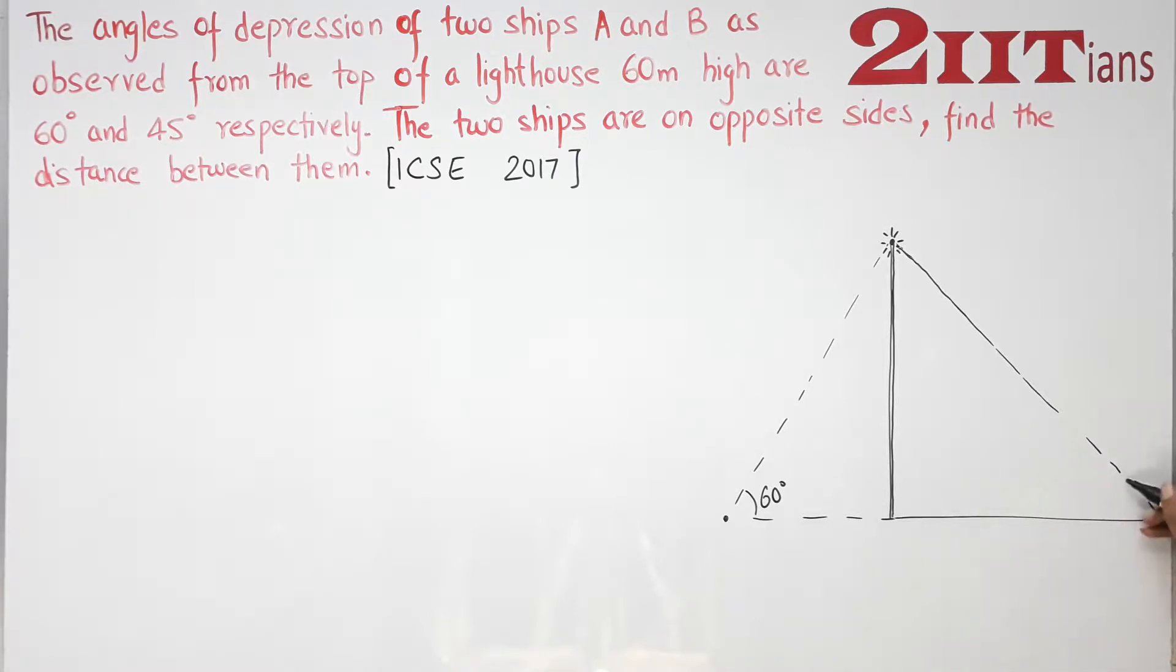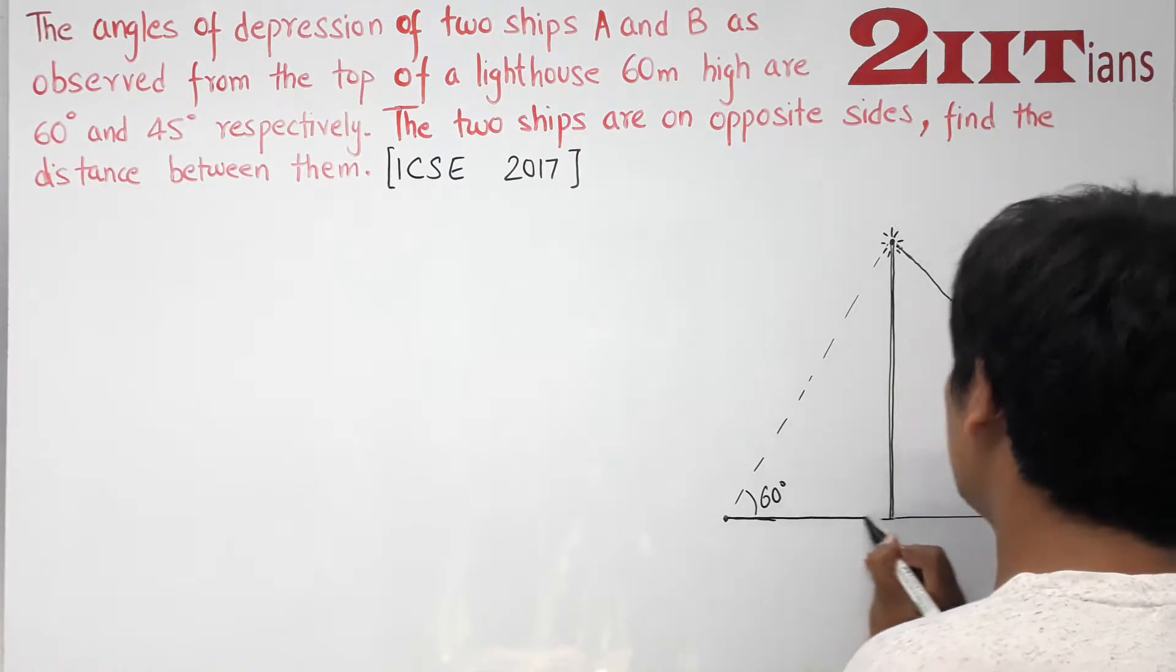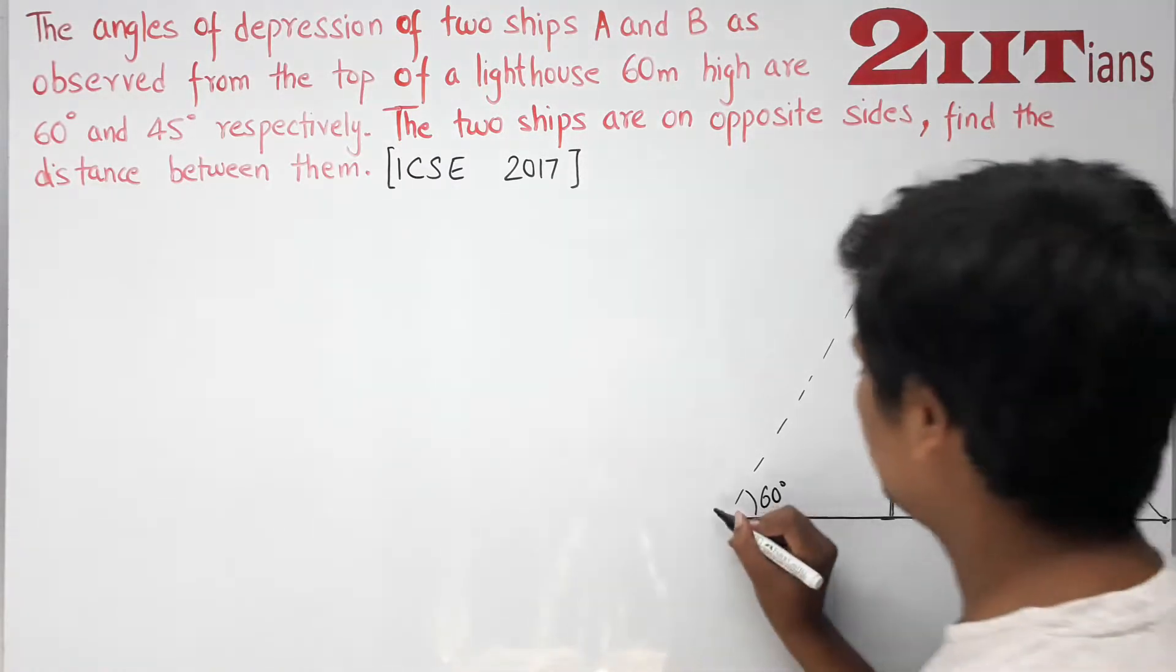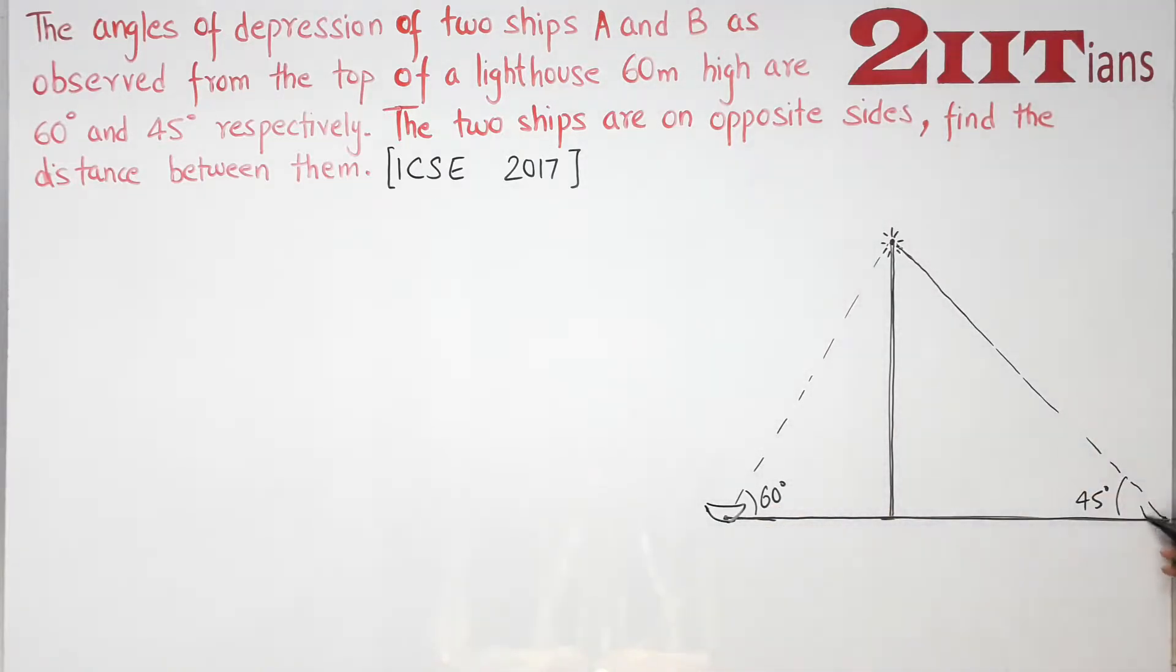This is 45 degrees. This is a solid line because this is ground or water level. Here is one ship and the other ship is here. In this situation, this is our lighthouse, which is 60 meters high, and these distances we don't know. This is point A and this is point B, and these are 90 degrees.